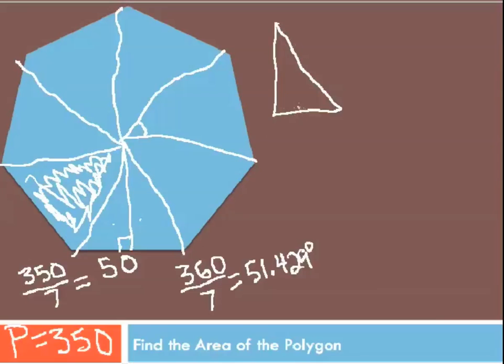This side right here is congruent to this side. Since the whole side of the heptagon is 50, this little piece right here is half of that, or 25.